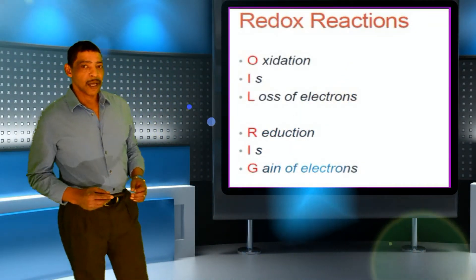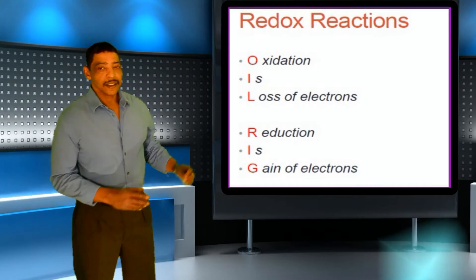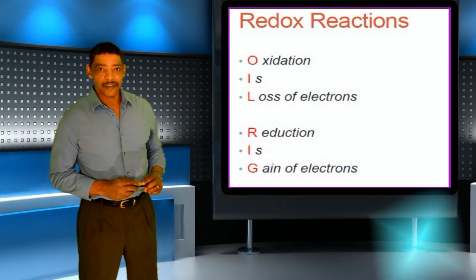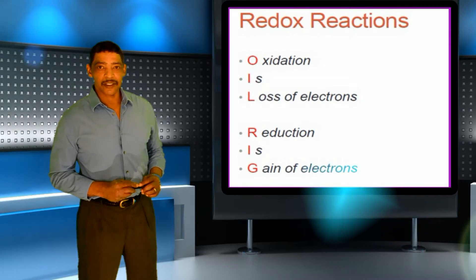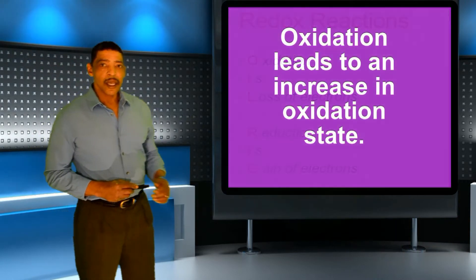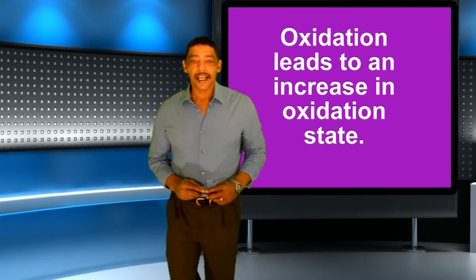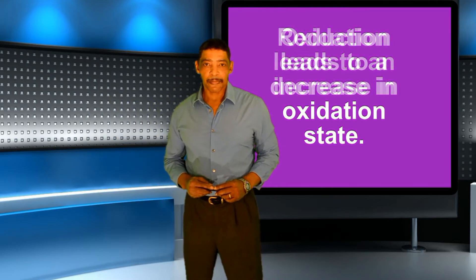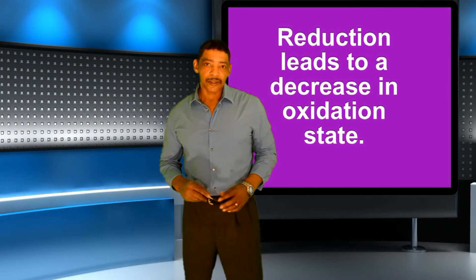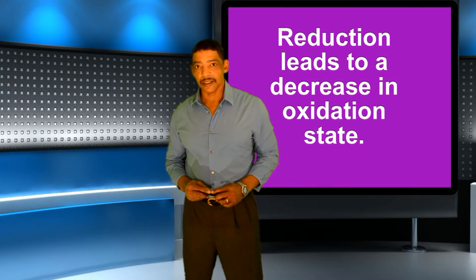Another popular mnemonic is OIL RIG: Oxidation is the Loss of electrons, Reduction is the Gain of electrons. When a substance undergoes oxidation, the oxidation number will increase. When a substance undergoes reduction, the oxidation number will decrease.